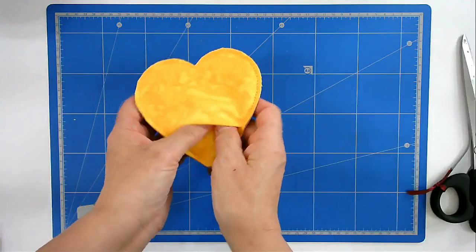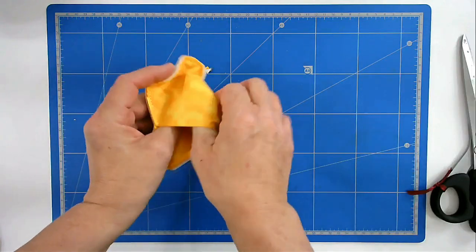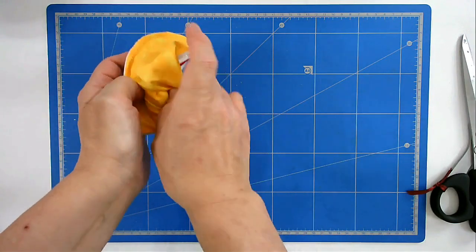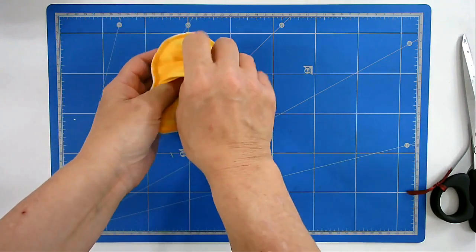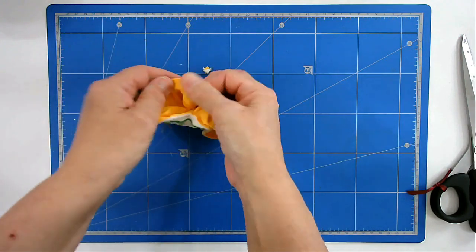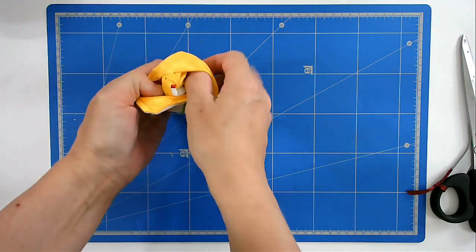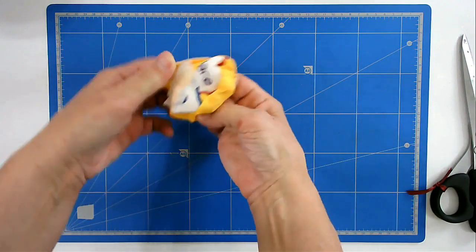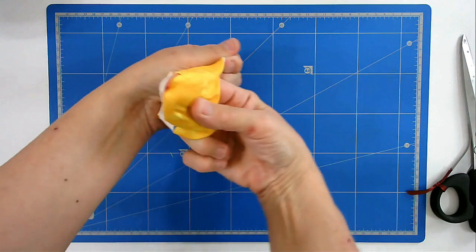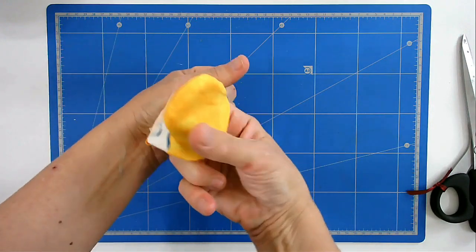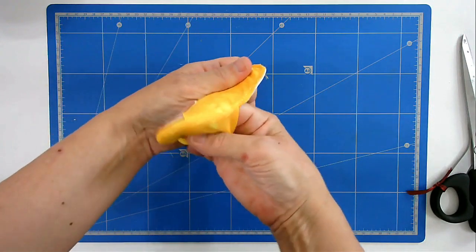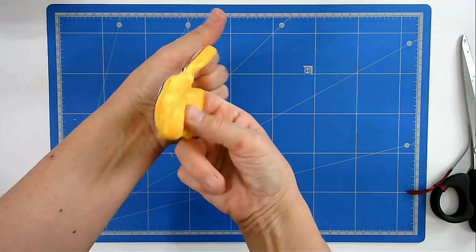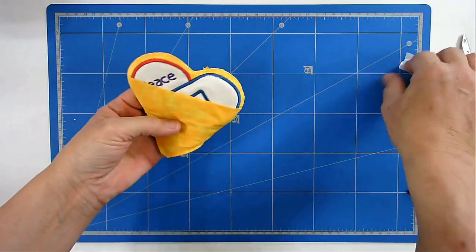Okay, I'm now going to turn this out the right way. I'm going to push into the seams. I'm going to remove that piece of tape.